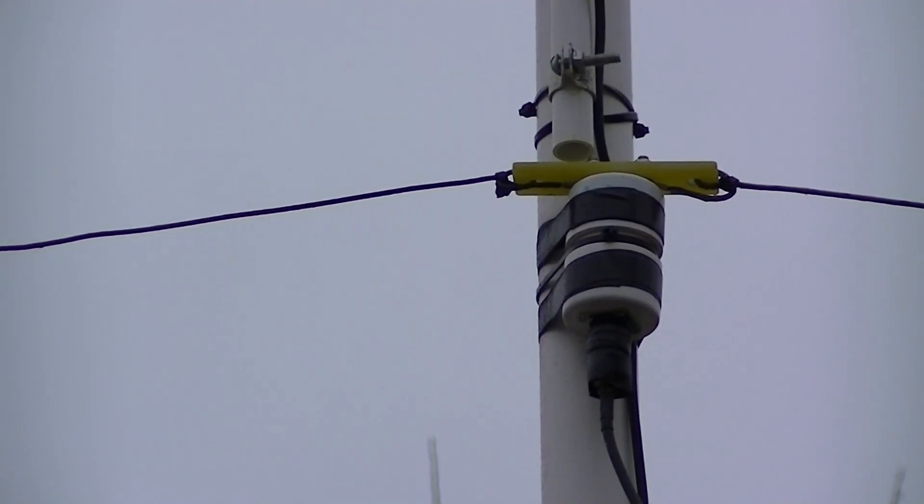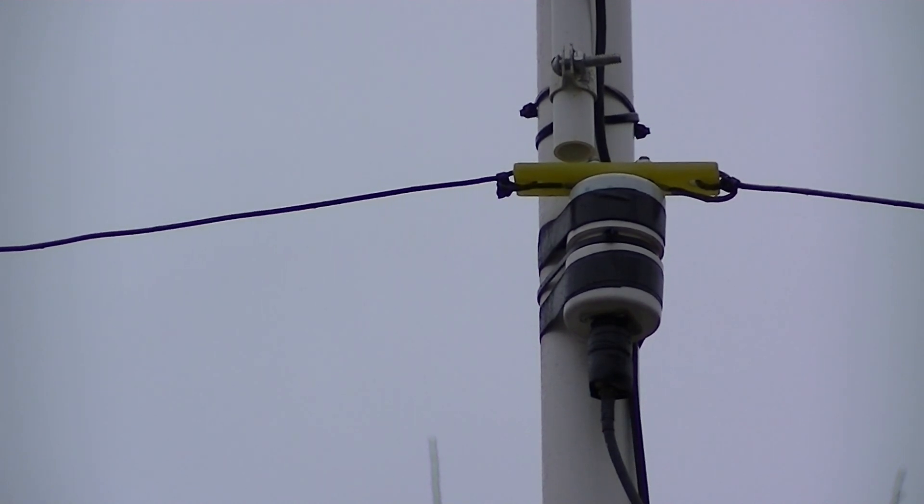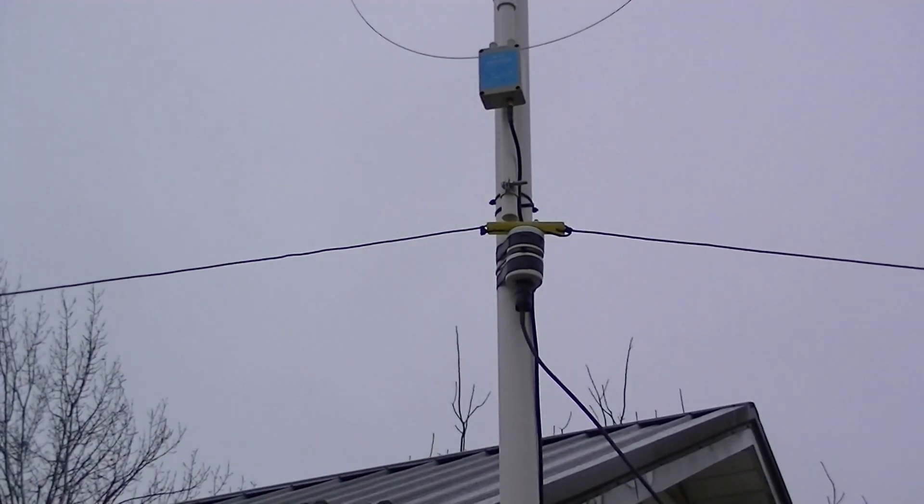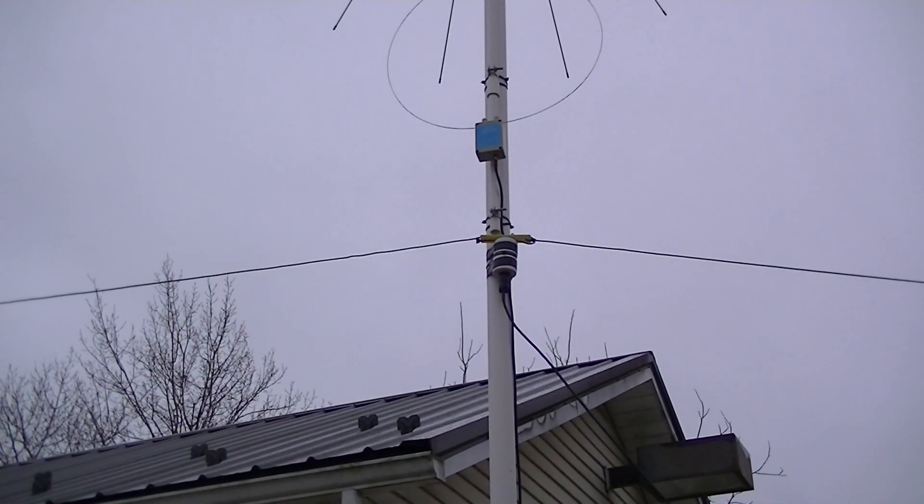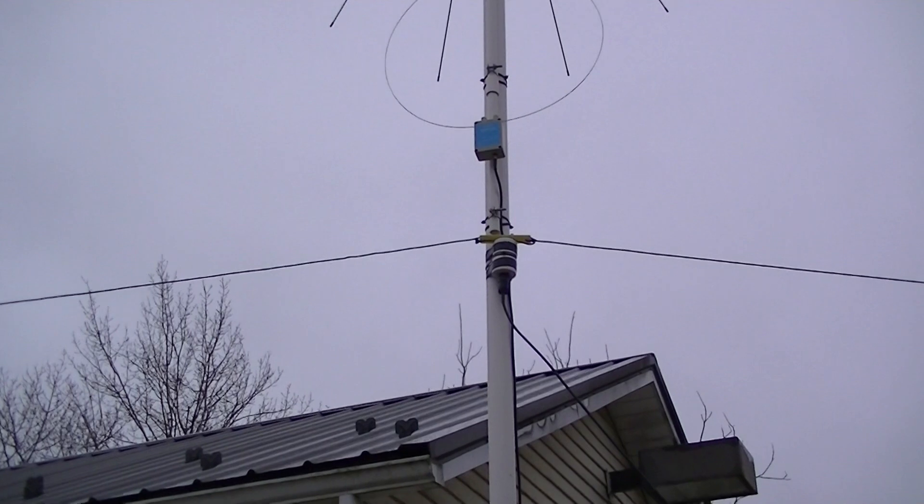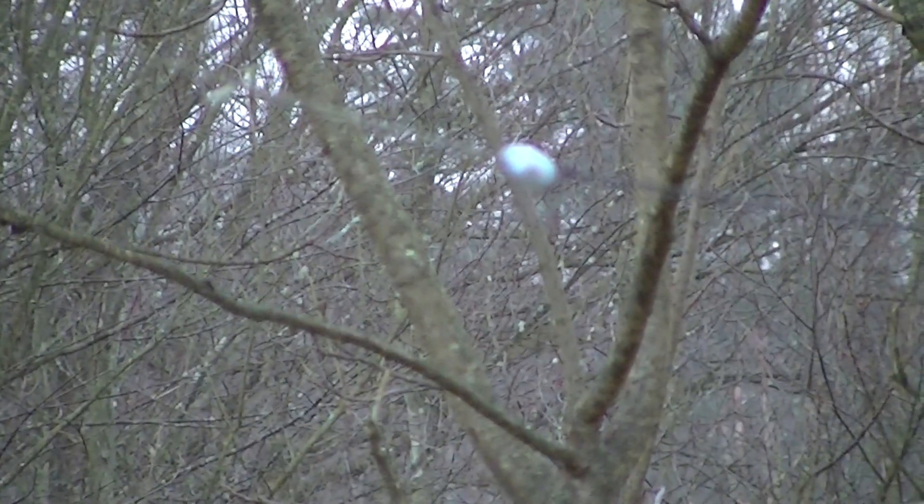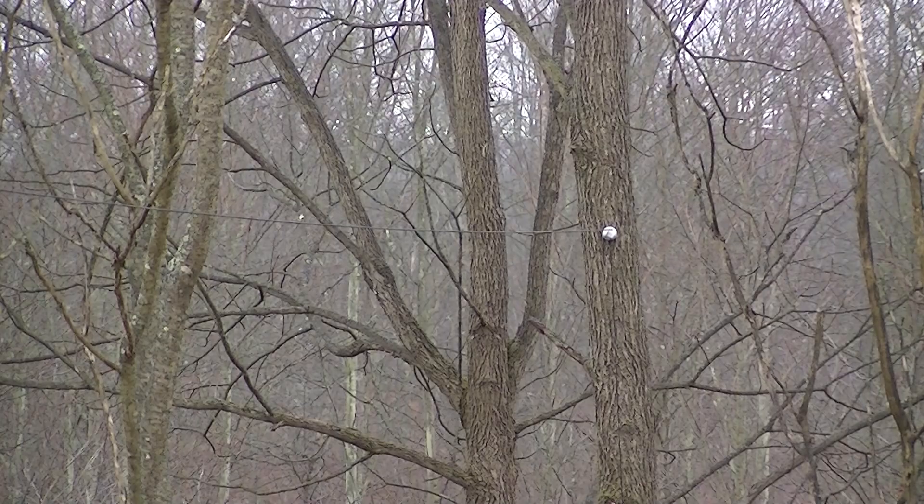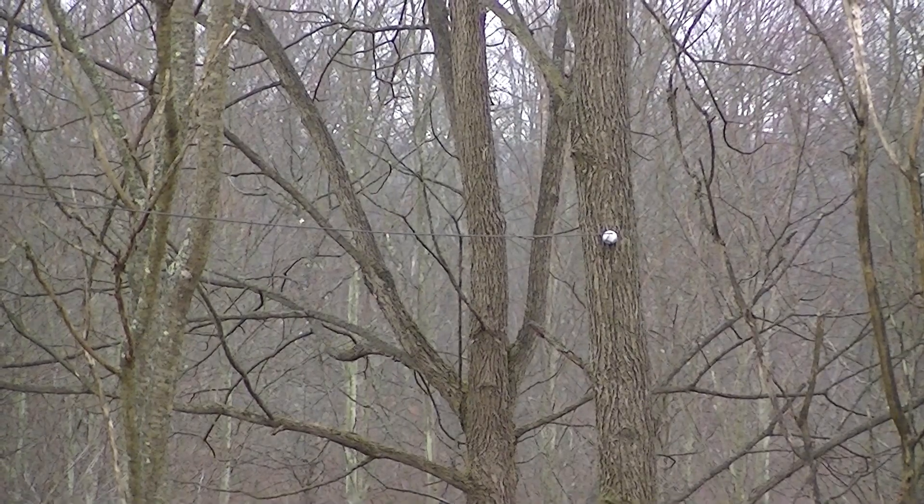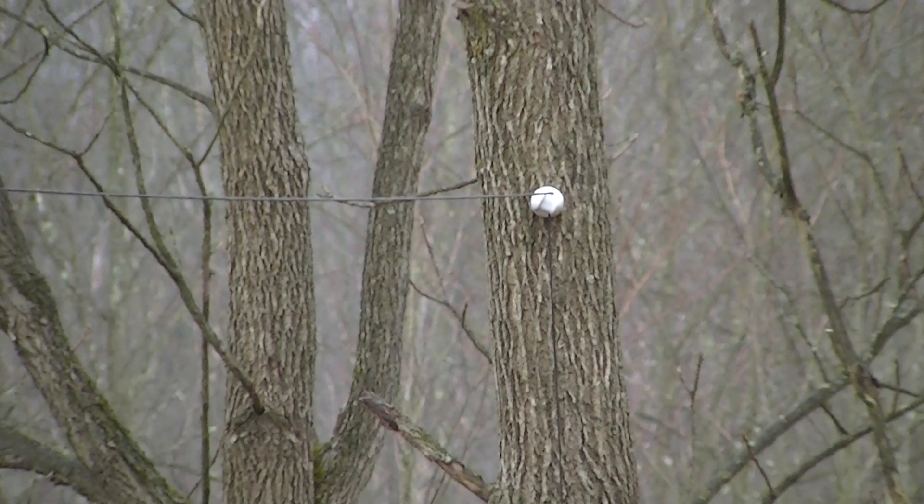Here's the center of the dipole mounted on top of this plastic pipe. I have a loop above it. So the wire goes out here. There's the glass egg. Gets to a tree where I have a ceramic insulator and then down to the bottom of the tree where I have a cleat.